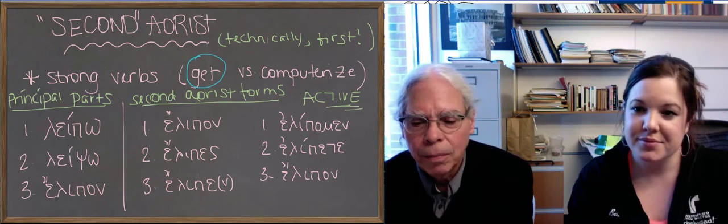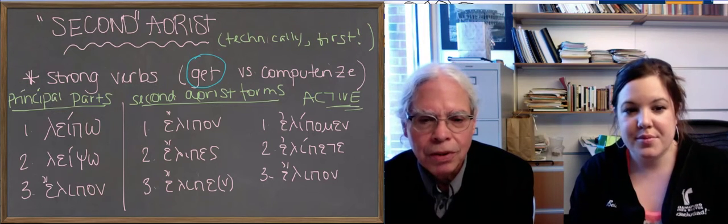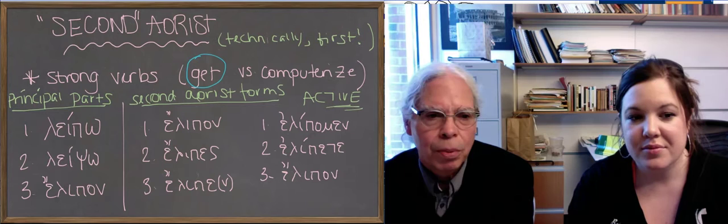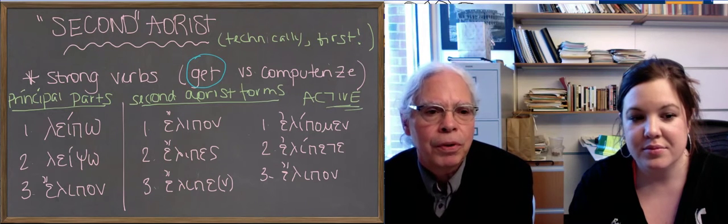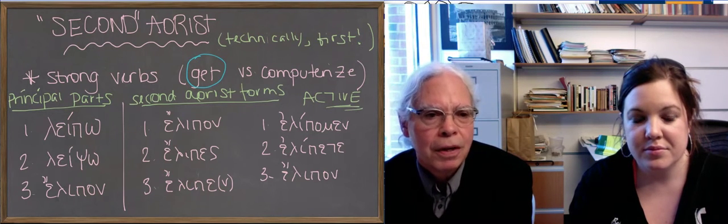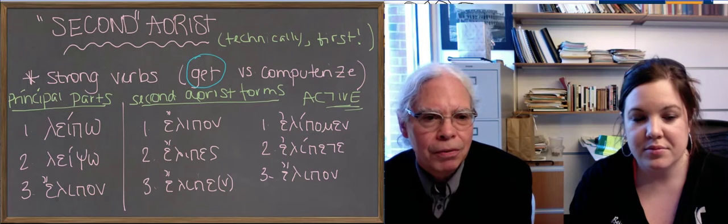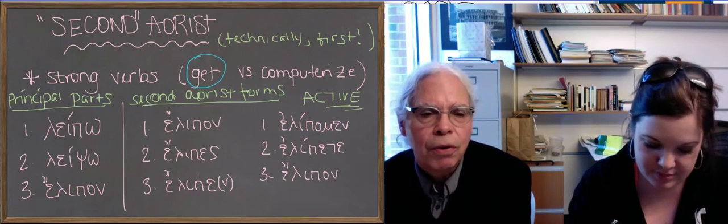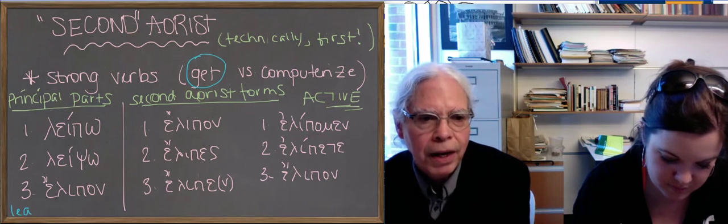And the book starts out slowly by teaching you one such verb, and that verb is the verb leipo. We put the first three principal parts on the left-hand side of the blackboard, of the verb leipo, which means leave or abandon in the active voice.